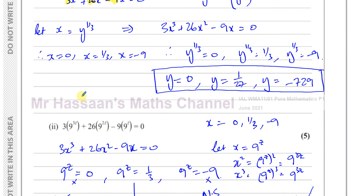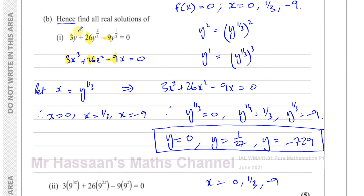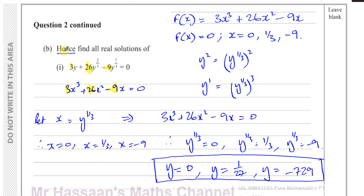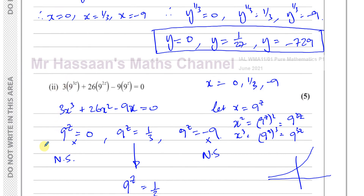So for part B, the word hence is very important. Whenever you see hence, take what you did before and write it next to the new equation — you will see the links clearly. Here the coefficients are 3, 26, and −9, and you notice that one term is the square of another and one is the cube of another, just like before. So you substitute x = 9^z, and the solutions for x become the values of 9^z from which you find z.